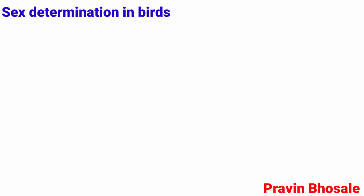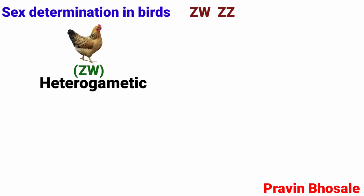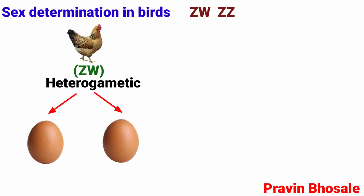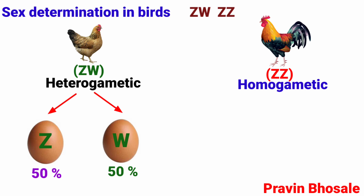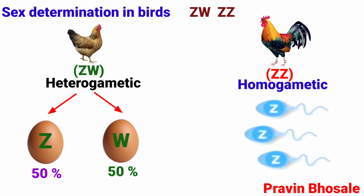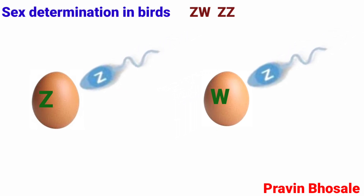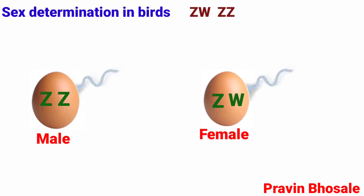Sex determination in birds: The chromosomal mechanism of sex determination is ZW-ZZ type. Here, females are heterogamous and produce two types of eggs — 50% eggs carry Z chromosome, while 50% eggs carry W chromosome. Males are homogamous and produce one type of sperm; each sperm carries a Z chromosome. Thus, the sex of the individual depends on the kind of egg fertilized by the sperm.